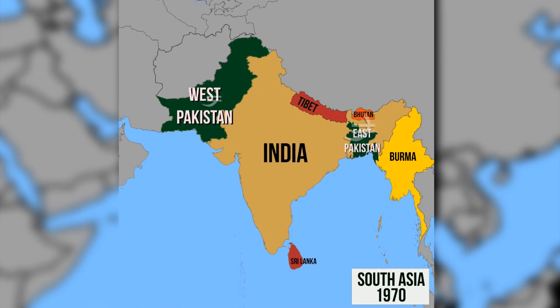In the following decades, a dynamic of exploitation and domination formed between the two areas of Pakistan. Despite the fact that East Pakistan had the majority of the population and also contributed the most to Pakistan's economy,